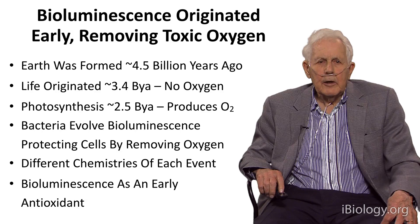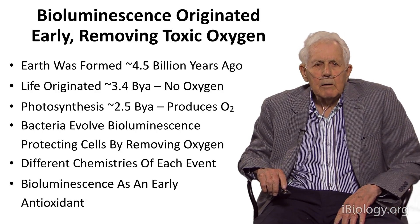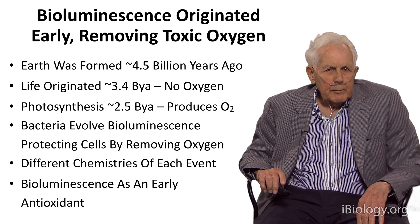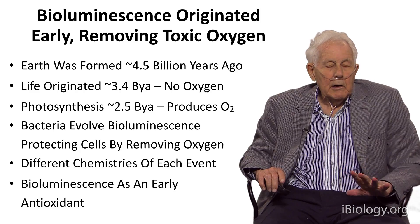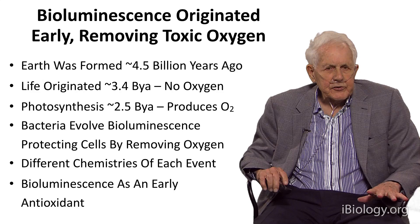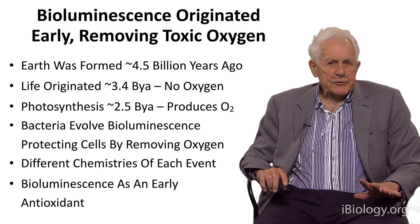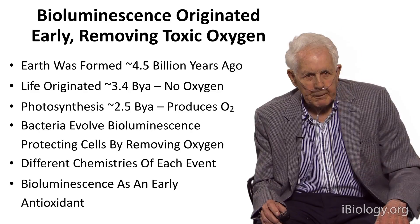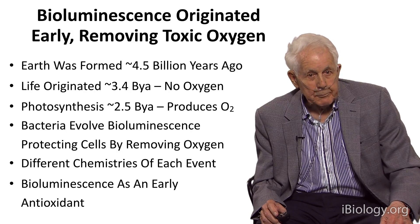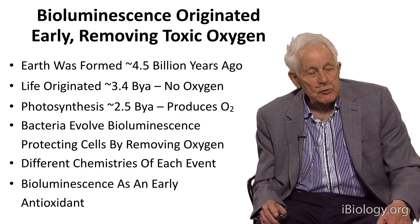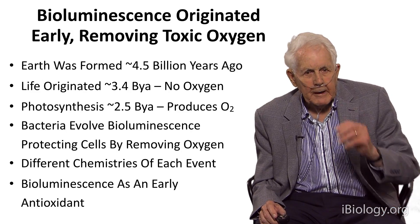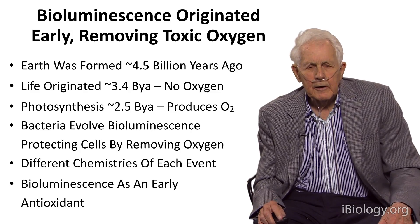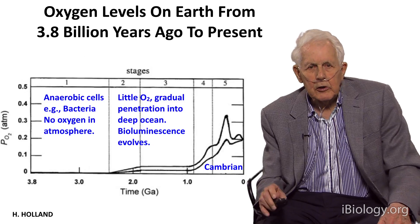What about the Earth? Here are the numbers: Earth was formed 4.5 billion years ago. Life originated about 3.5 to 3.4 billion years ago — anaerobically, with no oxygen. Oxygenic photosynthesis produced oxygen for the first time, and this was a very toxic substance. Our theory is that bacteria evolved bioluminescence as a way to protect cells by removing oxygen. There were many different events, and each was chemically different. Thus, bioluminescence is an early antioxidant.